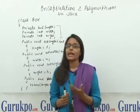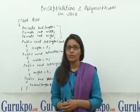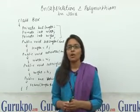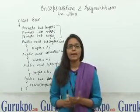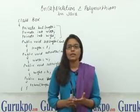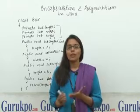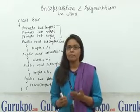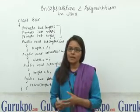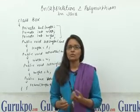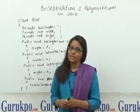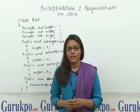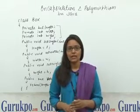We can achieve polymorphism by using the concept of method overloading. In method overloading, two or more functions have the same name but different parameters according to the object. That was all about polymorphism and encapsulation.